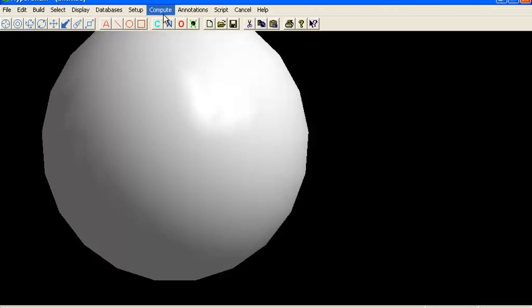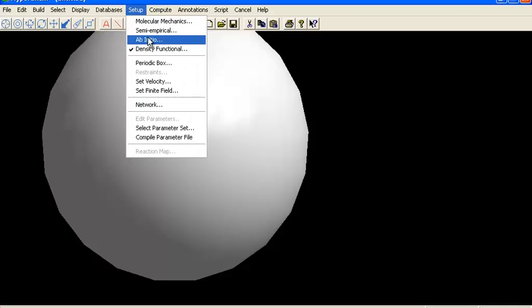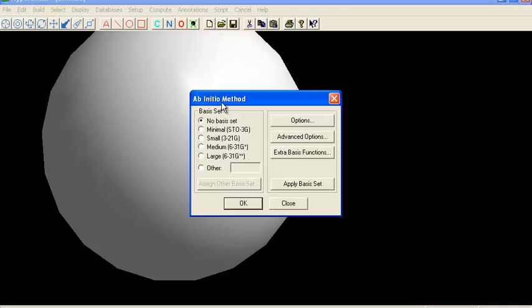Note that this is an artist's conception of the helium atom. Now what we're going to do is set up that calculation. This ab initio is another name for the Hartree-Fock self-consistent field method.